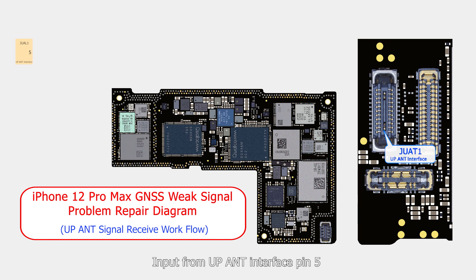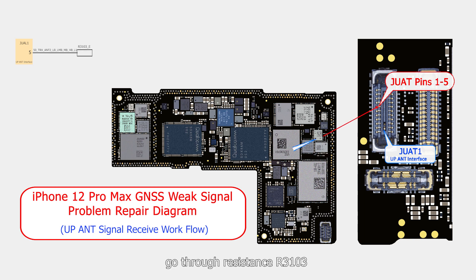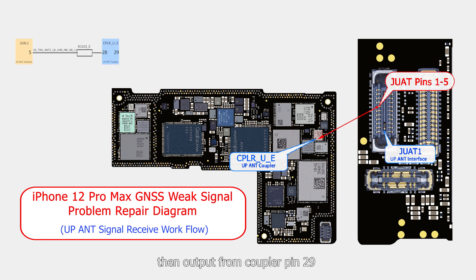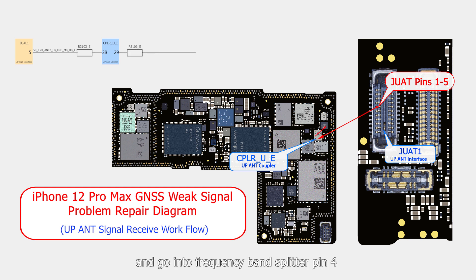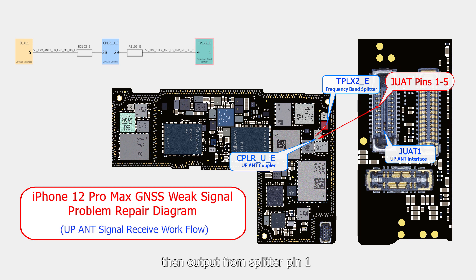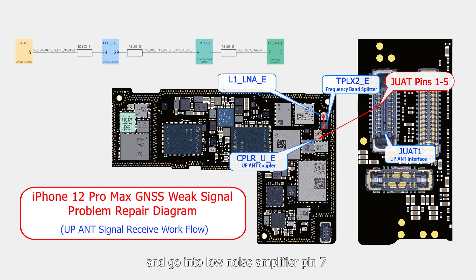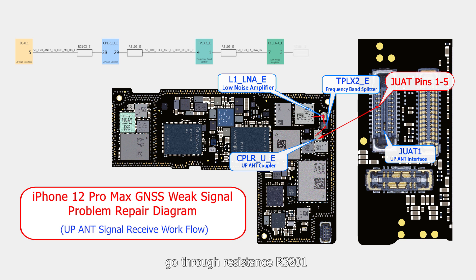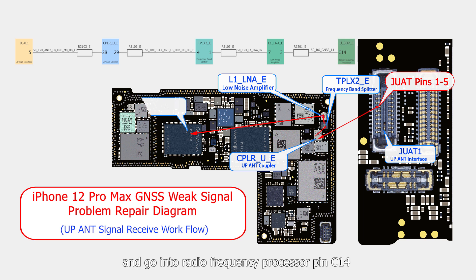GNSS received signal input from upper antenna interface pin 5. Go through resistance R3103 and go into coupler pin 28. Then output from coupler pin 29, go through resistance R3106, and go into frequency band splitter pin 4. Then output from splitter pin 1, go through resistance R3105, and go into low noise amplifier pin 7. Finally, output from amplifier pin 3, go through resistance R3201, and go into radio frequency processor pin C14.